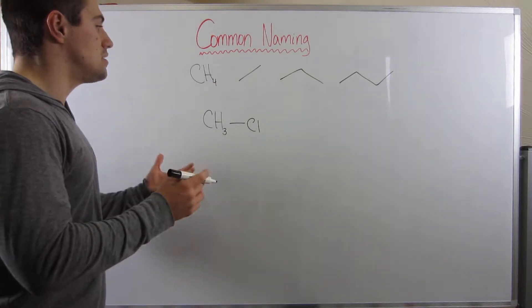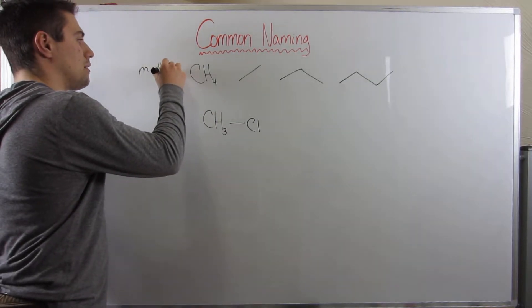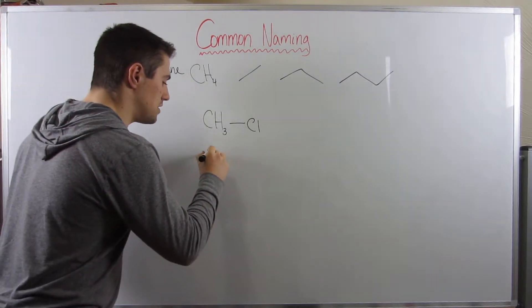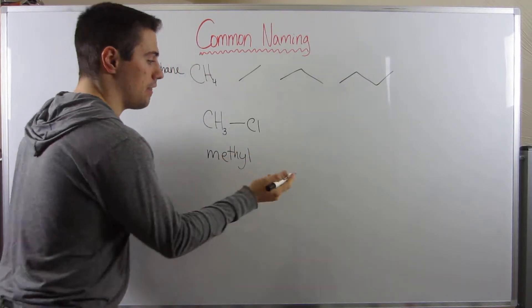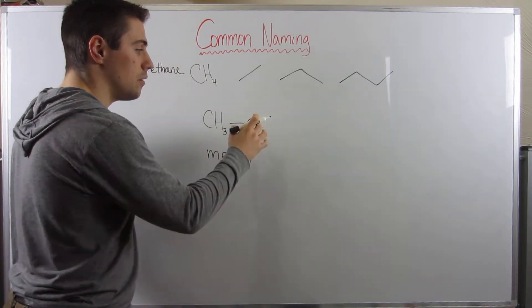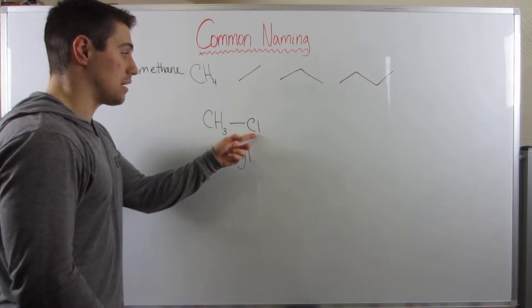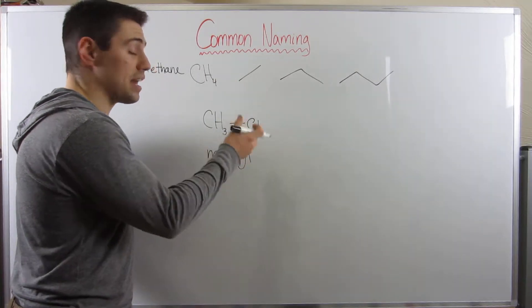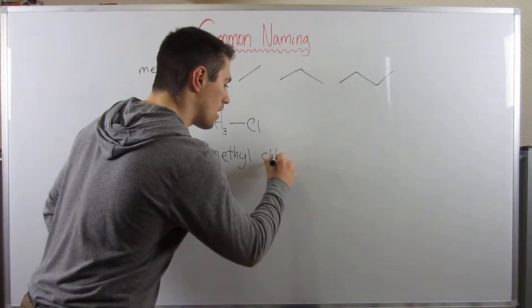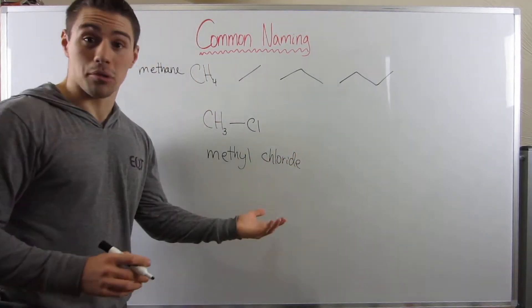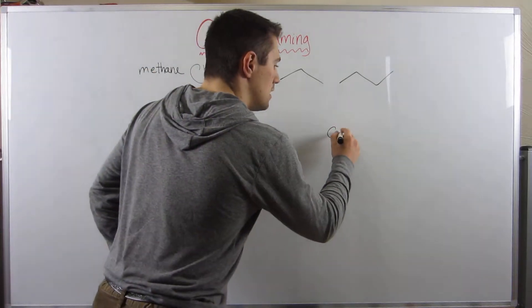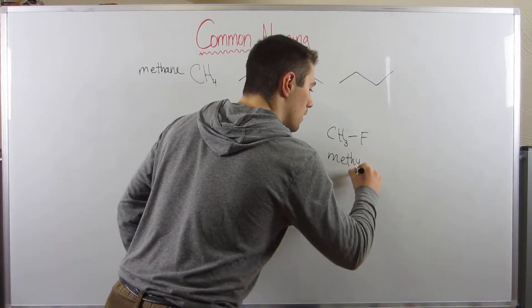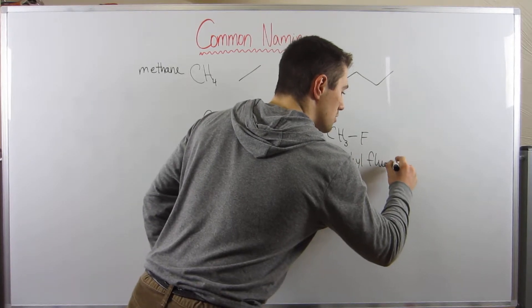So how do we refer to this? The easiest way: the parent chain is methane, so instead of saying methane, you drop the -ane ending and say 'meth-', then add -yl, giving you 'methyl', then a space, and then whatever you have attached. If it's a halogen — chlorine, iodine, bromine — you add an -ide ending. So this would be methyl chloride. If I gave you CH3F, that would be methyl fluoride. Just drop the -ane, add -yl, and add -ide.